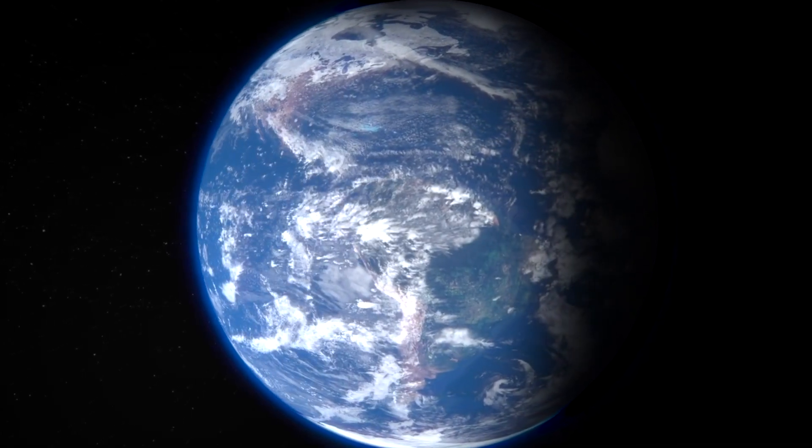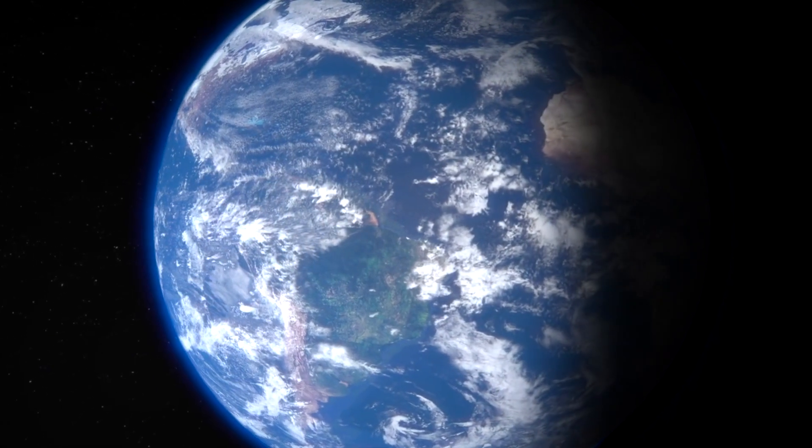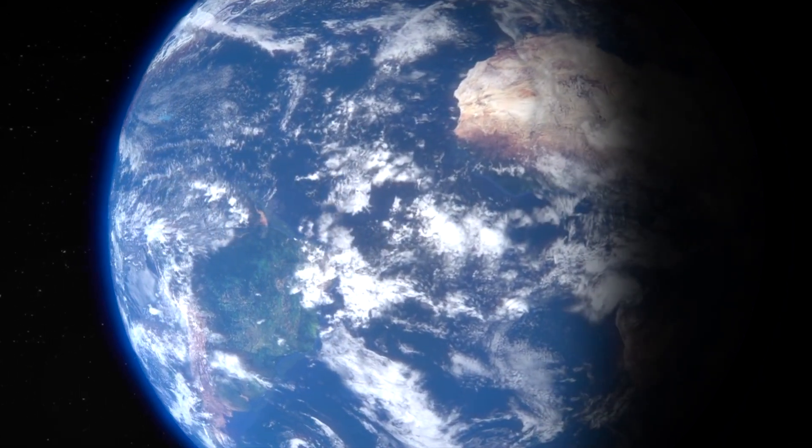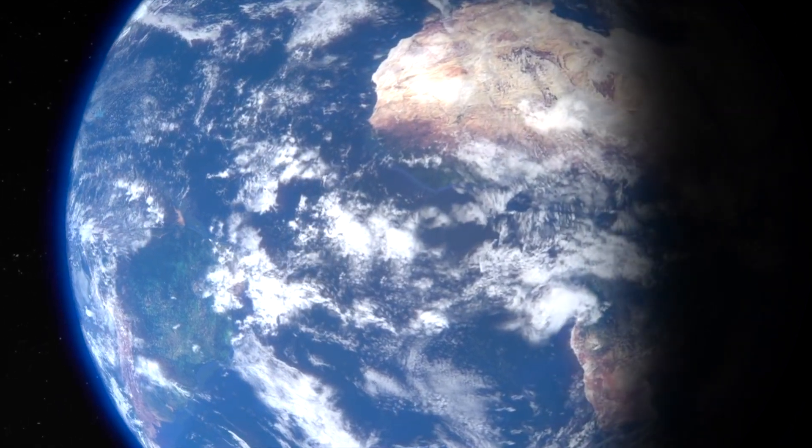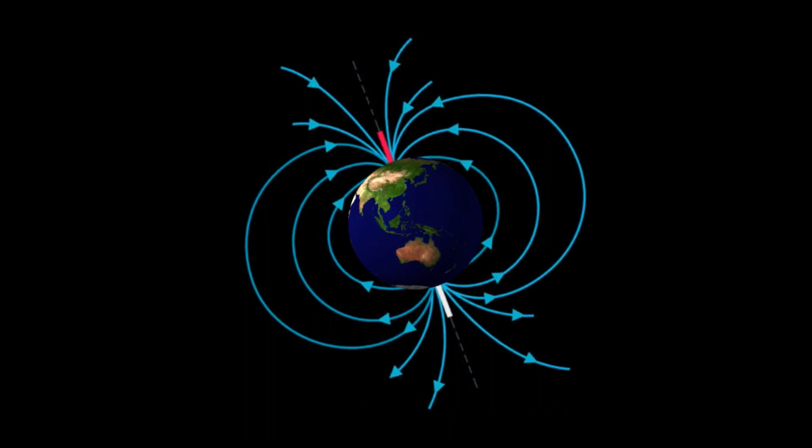The terms inclination and declination refer to properties of the field that change across the Earth's surface. The magnetic field doesn't have the same strength or orientation everywhere. It is not uniform. This is partly because of the way it curves, which causes inclination.